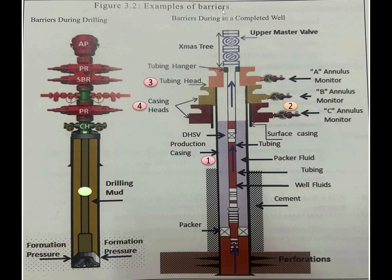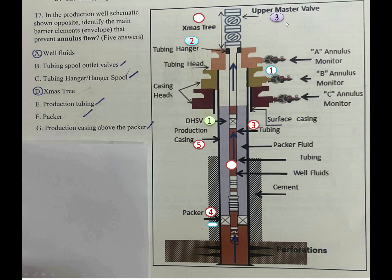هنا عندي Figures — Examples of Barriers. في جهة اليسار أمثلة على الـ barriers خلال عمليات الحفر، عندي طين الحفر Hydrostatic Mud. في جهة اليمين Barriers During a Completed Well — الـ barriers في آبار الإكمال: أولاً Production Casing، ثانياً Side Outlet Valves، ثالثاً Tubing Head، رابعاً Casing Head Housing. كذلك عندنا Barrier Element لمنع الجريان من قمة الـ Packer، وأولاً Downhole Safety Valve، وثانياً Tubing Hanger، وثالثاً Upper Master Valve.